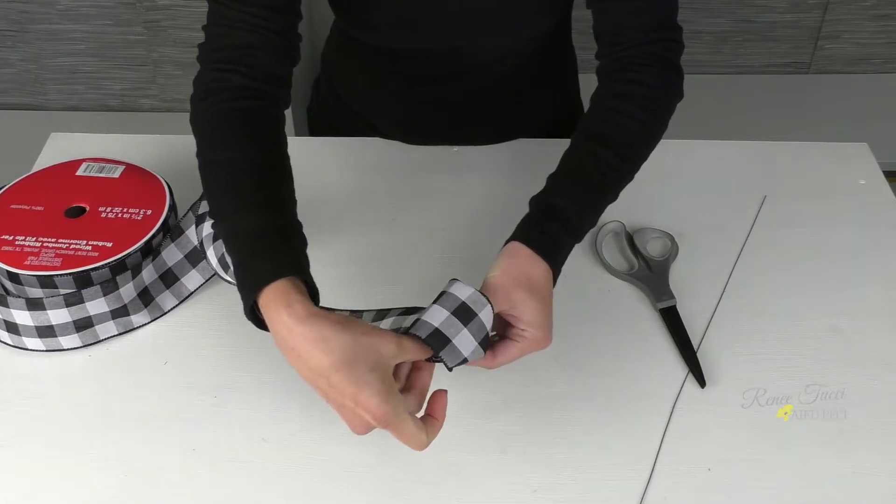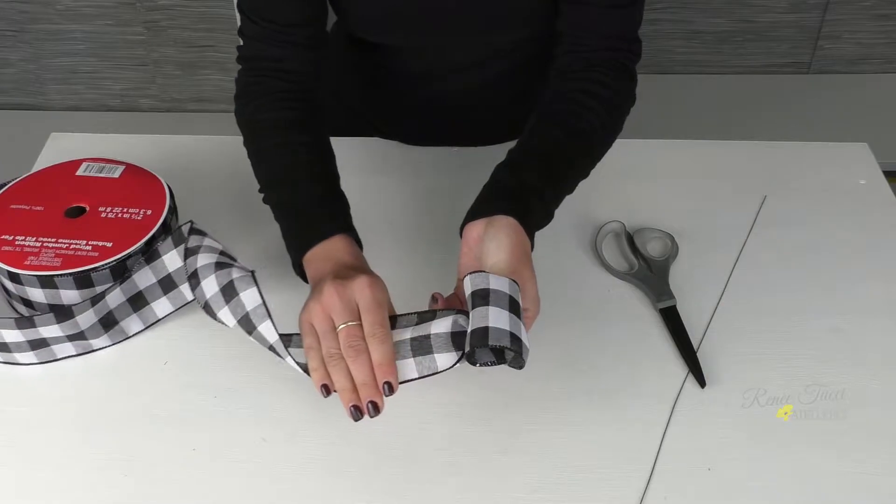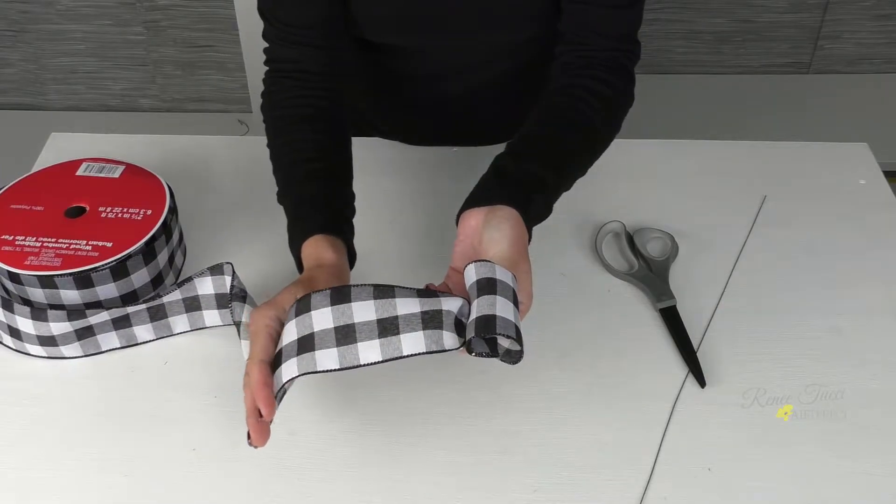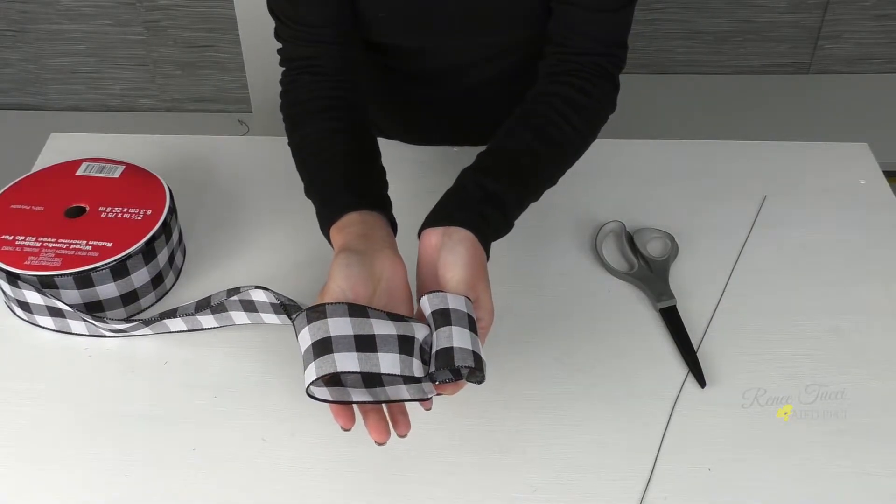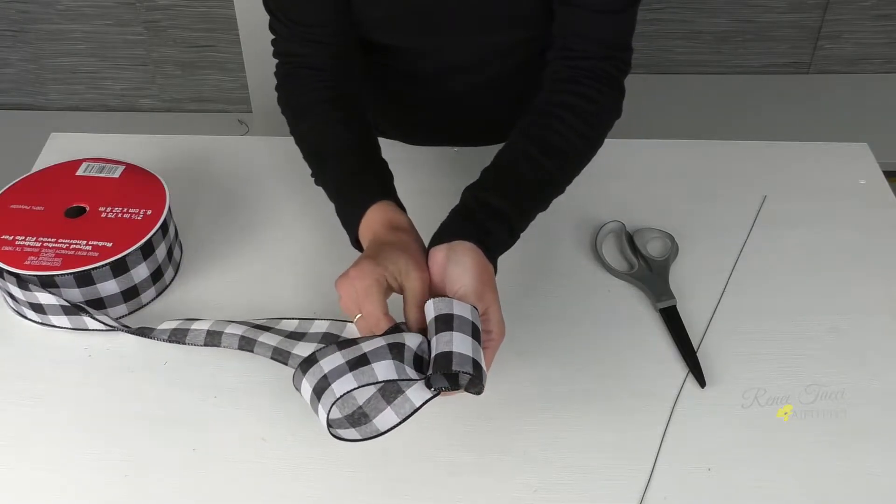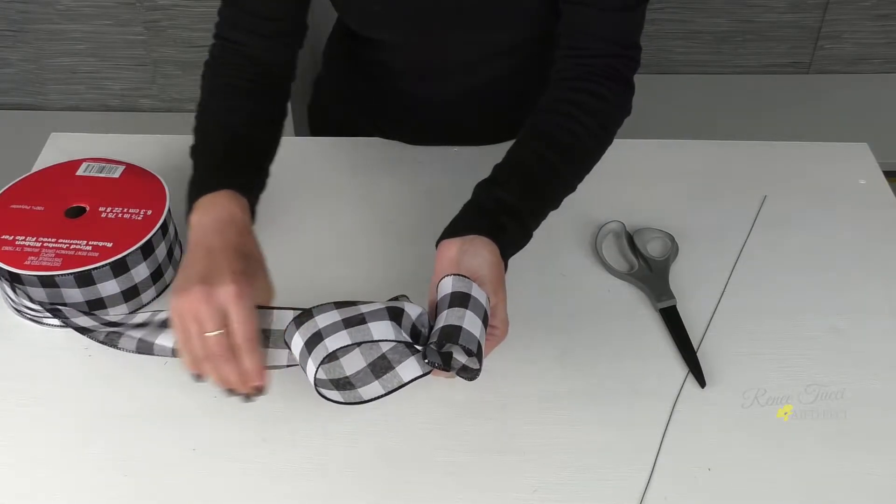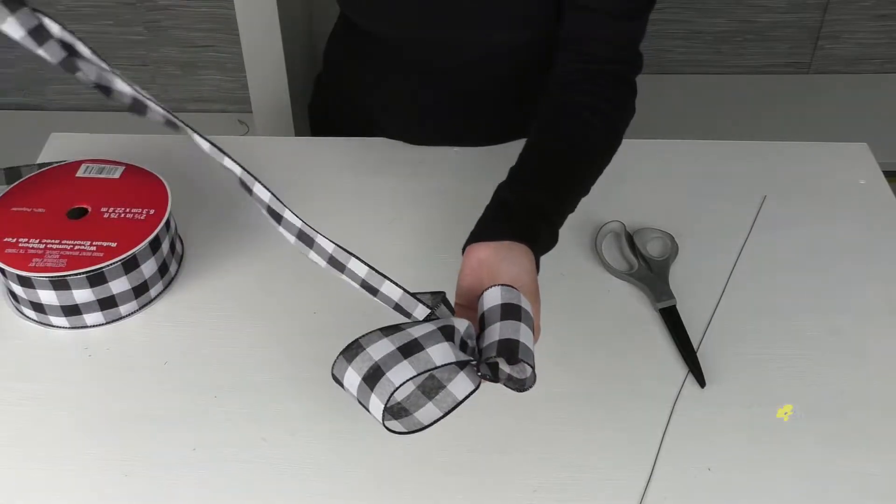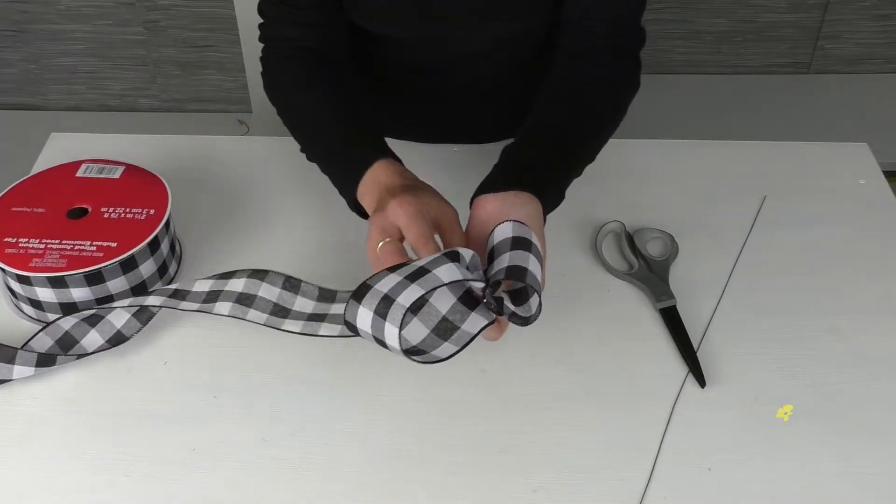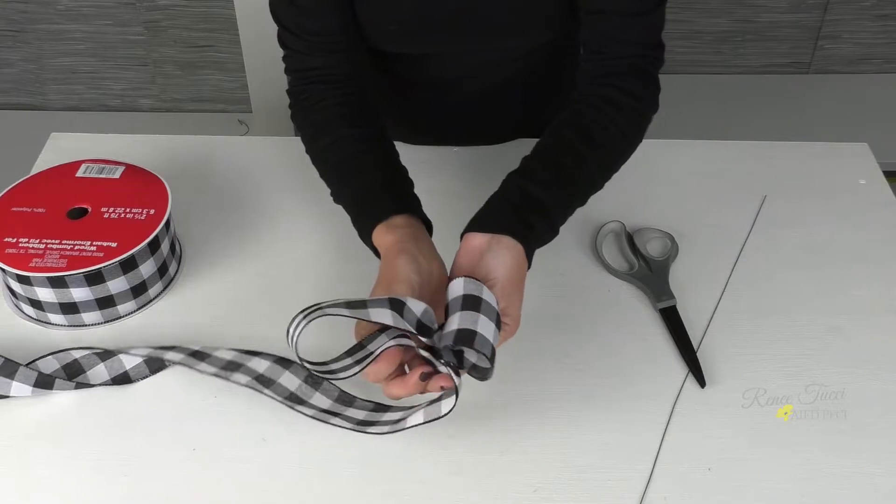So now we've got our center loop. Let's move to our side loops. So we take our ribbon, we run it out as long as we think we want our first loop to be, and then run it back to the center area. Now, as you go, you're going to have to continually give yourself some slack from your bolt of ribbon.